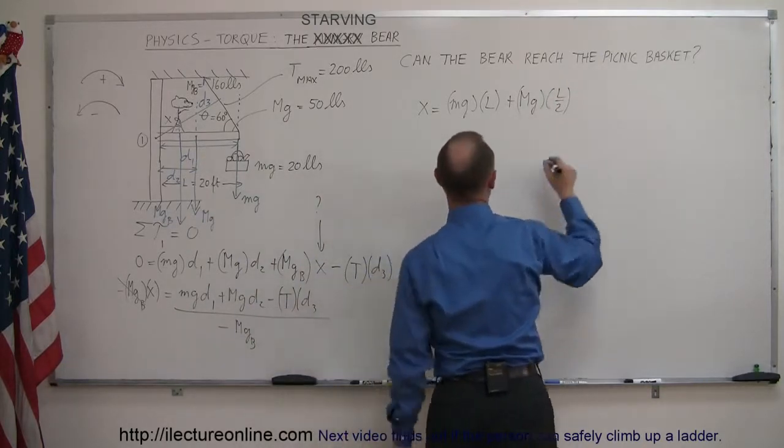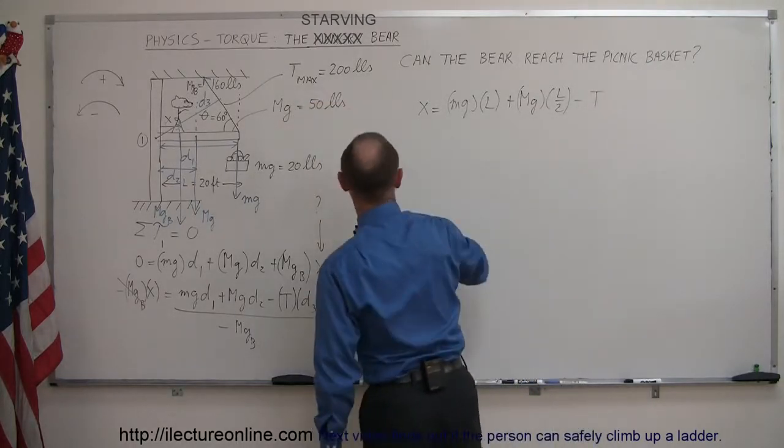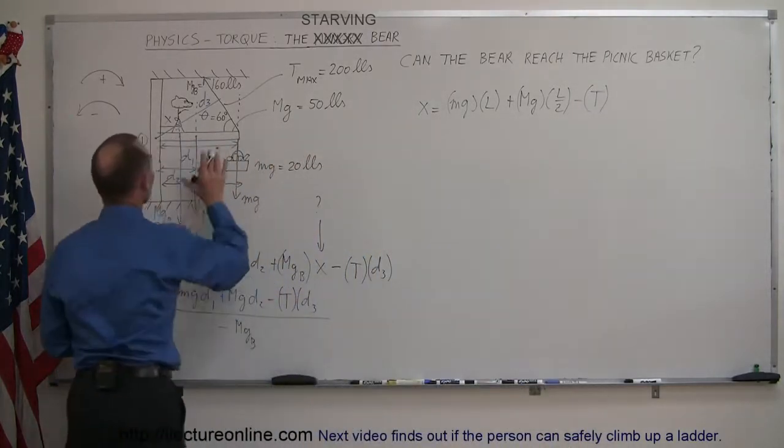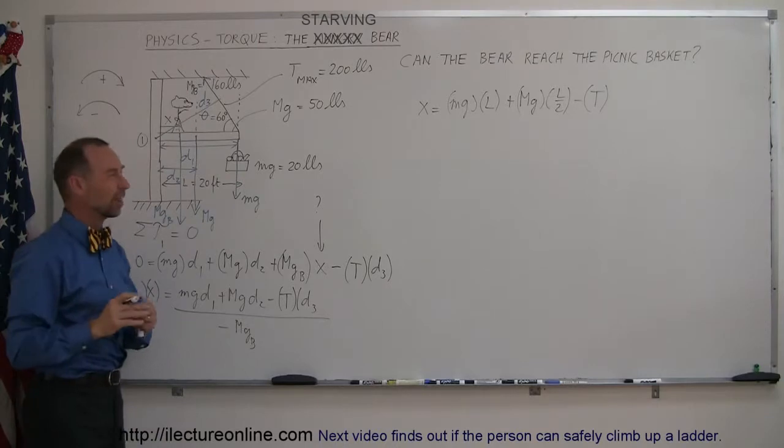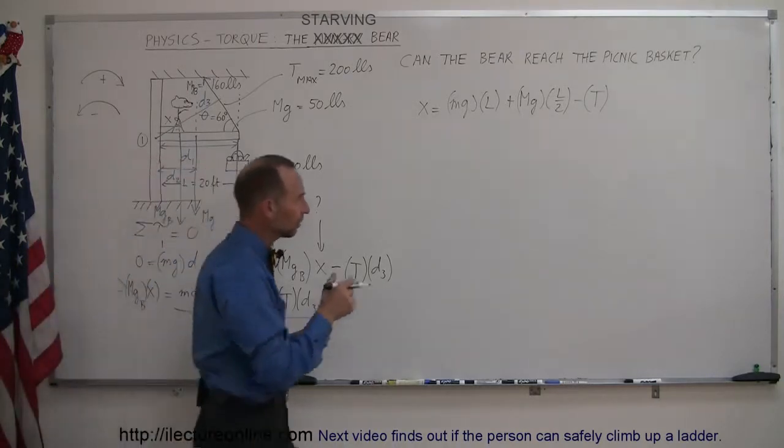And then we have minus the tension, and we're going to then plug in what the maximum tension is, times D3. Now D3 is this distance right here. We're going to need to set up a little triangle to figure this out. So I need some room for my little triangle.